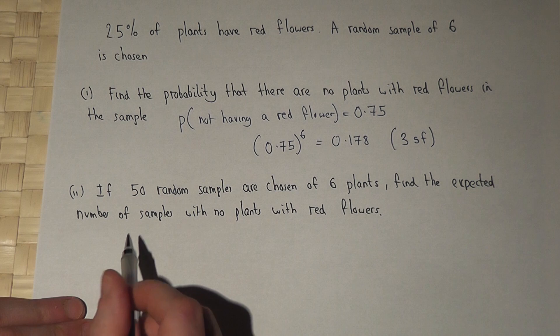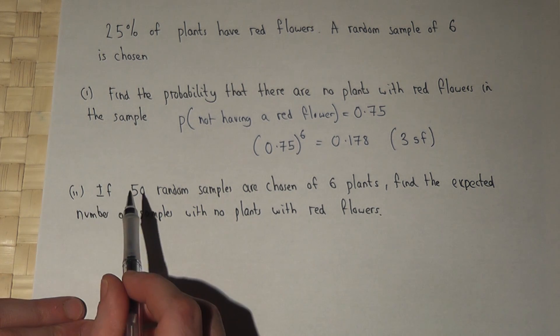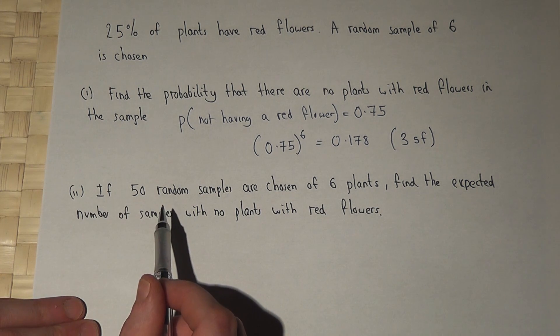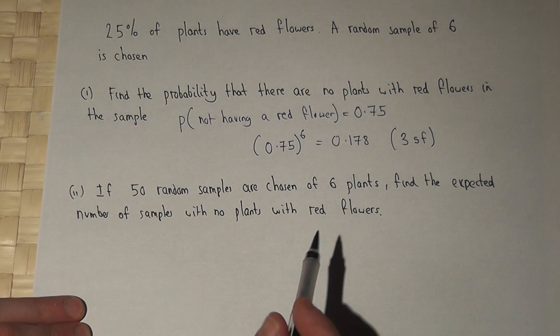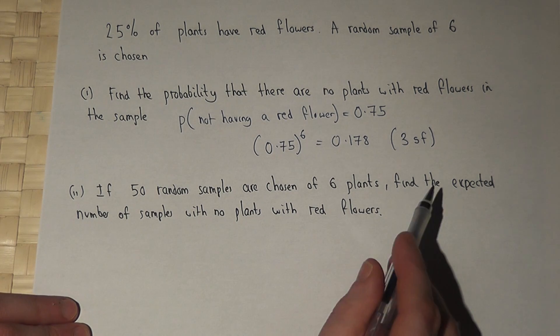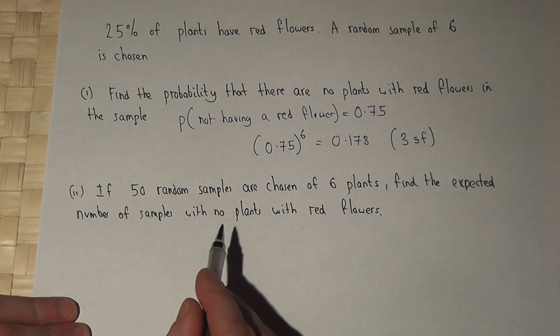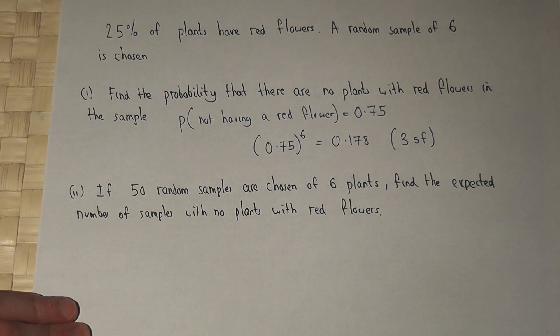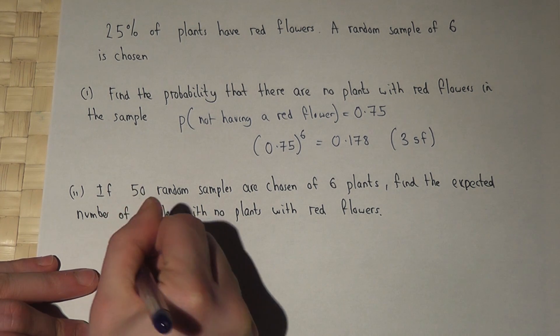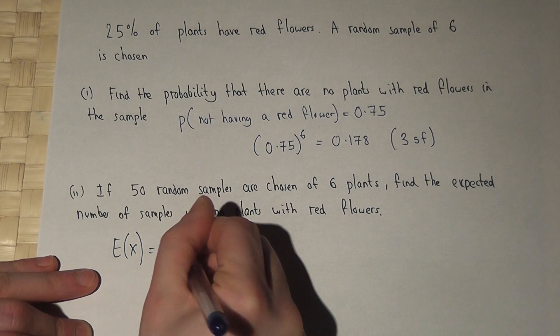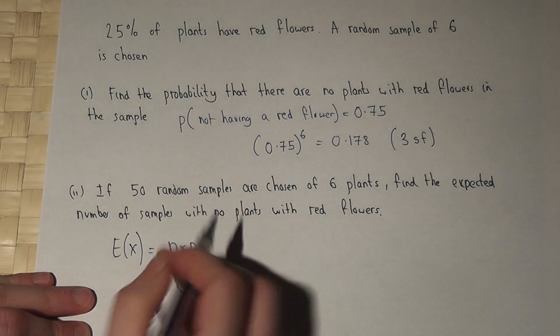If we choose 50 such random samples of six plants, then to find the expected number of samples with no plants with red flowers, we do E(X) equals n times p. Now there are 50 samples.